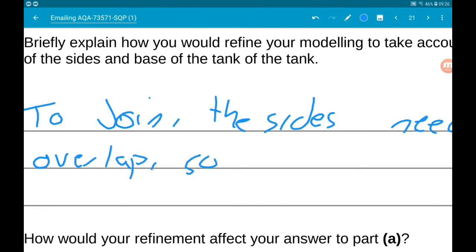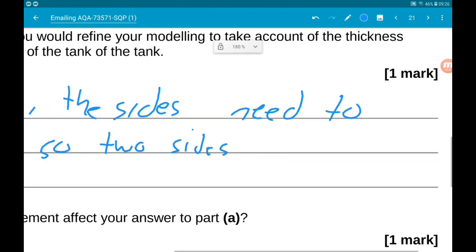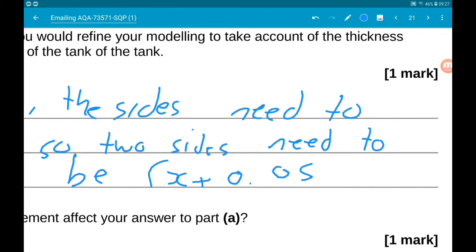The sides need to overlap, so two sides need to be x + 0.05 meters. That is how we would refine our model.